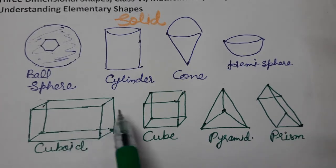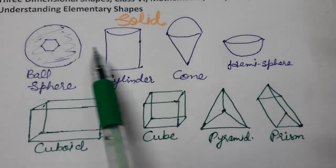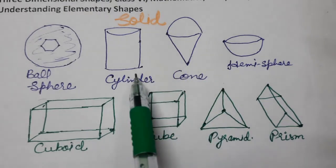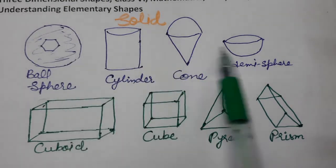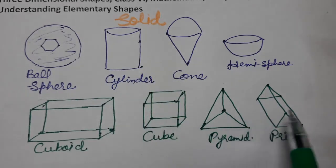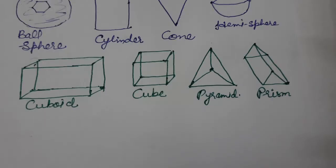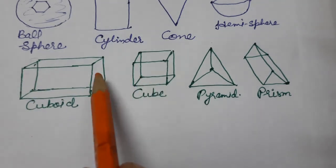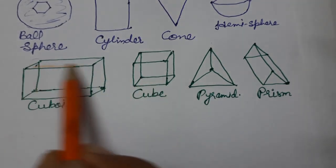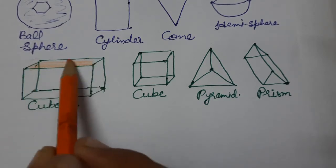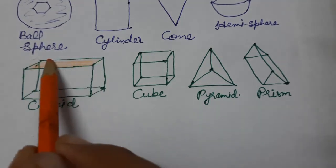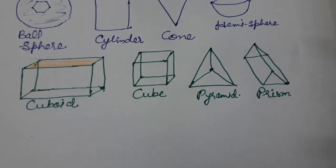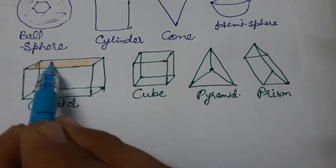If we join two triangular faces, we get a triangular prism. So all of these are solid shapes — some with curved surfaces, some with flat surfaces. Each flat side of a cube or cuboid is called a face. This flat surface is called a face of the cuboid.